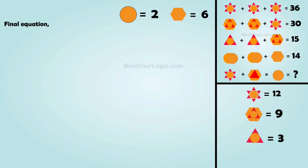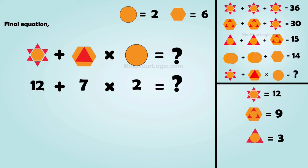Moving on to the final equation. Star hexagon plus hexagon triangle multiply by circle equals question mark. Substituting the values, we get the value of the final equation as 26.